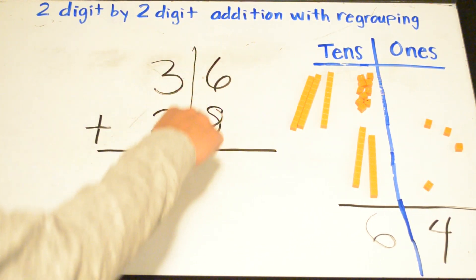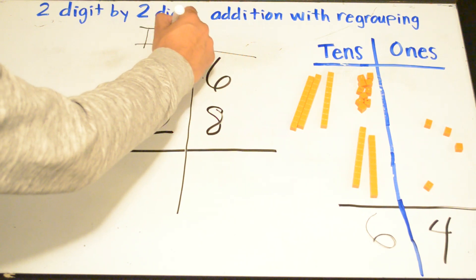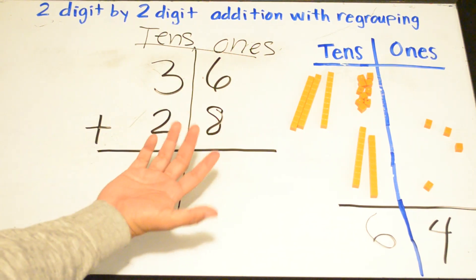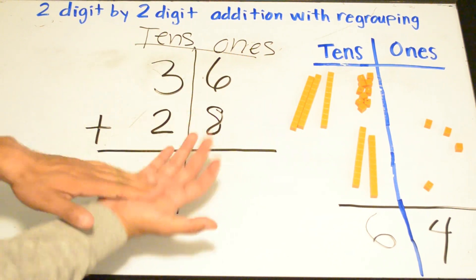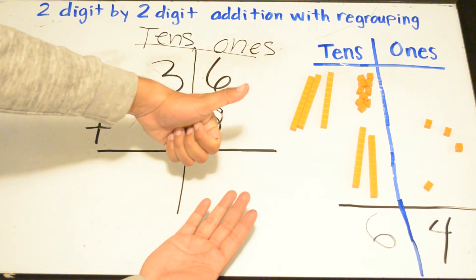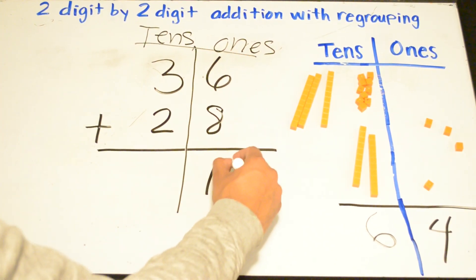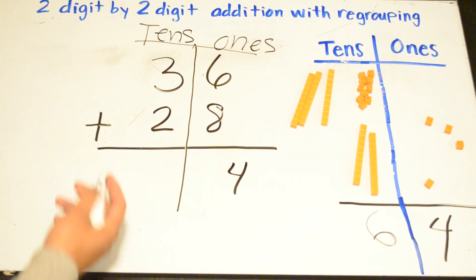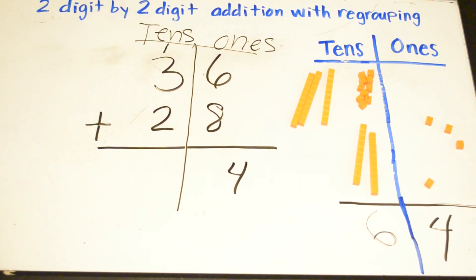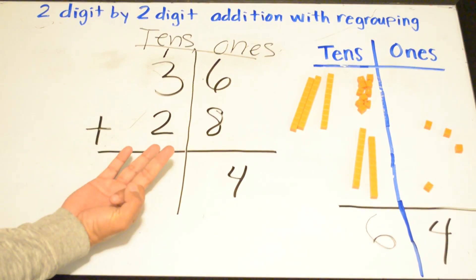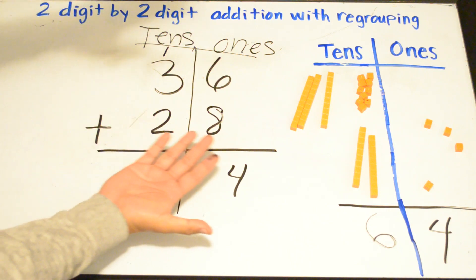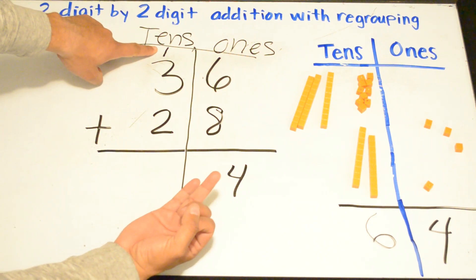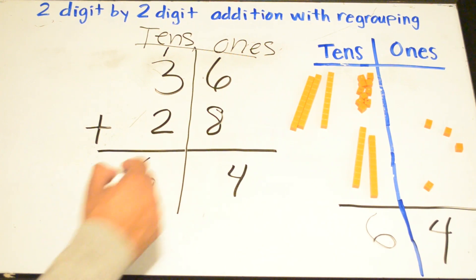Now doing it the other way: tens and ones. What's bigger — six or eight? Eight. We clap our hand on eight and add six more: eight, nine, ten, eleven, twelve, thirteen, fourteen. We cannot have more than nine in the ones place, so we take that one and add it at the top. We count three plus two more — three, four, five — but don't forget we got one more, so it's six. Your answer is 64.